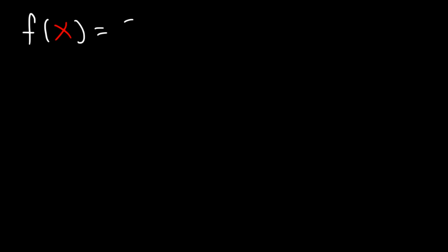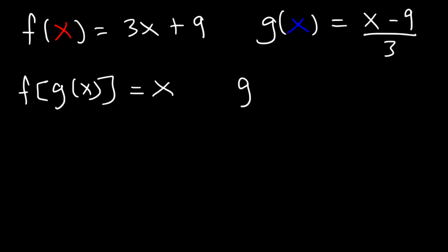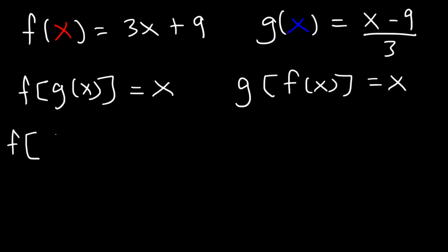Consider the functions f of x, which is equal to 3x plus 9, and g of x, which is equal to x minus 9 over 3. How can we determine if these two functions are inverses of each other? We need to show that f of g of x equals x, and that g of f of x equals x. Let's replace g of x with what it's equal to: x minus 9 divided by 3.